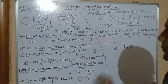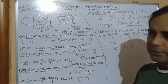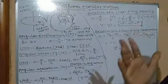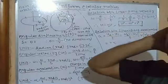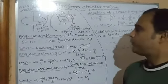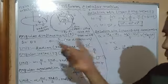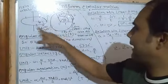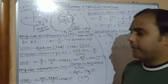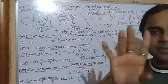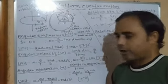Now we will see the direction of angular displacement, angular velocity, and angular acceleration. In linear motion, displacement, velocity, and acceleration have a direction along the straight line. But since circular motion doesn't take place along a straight line, we follow the right-hand screw rule. When a particle moves in a circular curve in the anti-clockwise direction, the direction in which the screw advances is considered the direction of the angular terms — displacement, velocity, and acceleration.